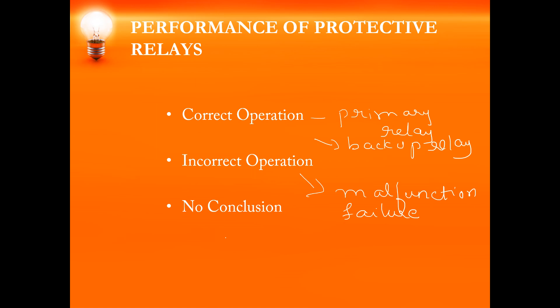Next is no conclusion. No conclusion means that instead of one relay operating, two relays or more than two relays have operated, but without any fault. In that case, you cannot draw any conclusion as to why the relays have tripped or why the relays have given a signal for the circuit breaker to trip. So no decision can be taken — no conclusion can be drawn. The performance of protective relays can therefore be classified as correct operation, incorrect operation, or no conclusion.